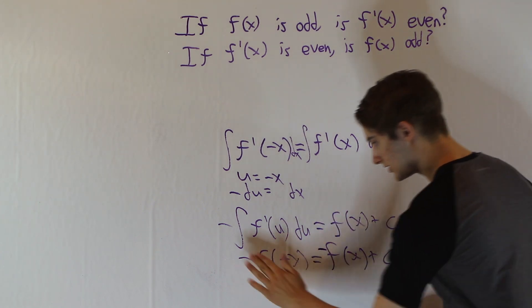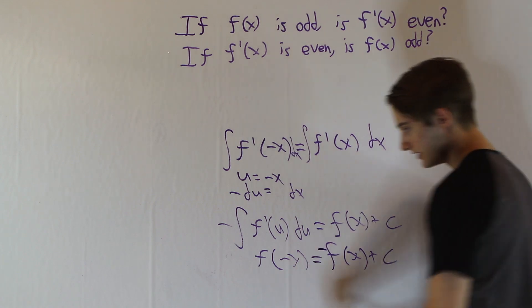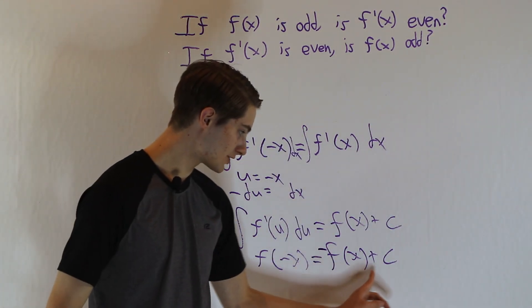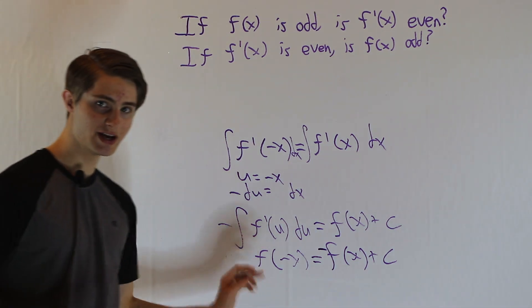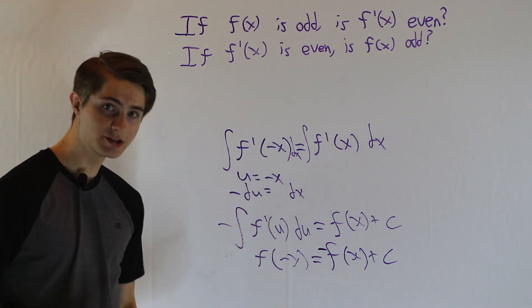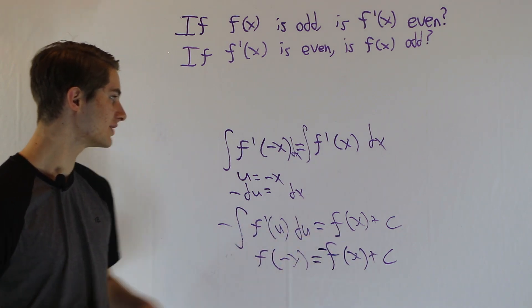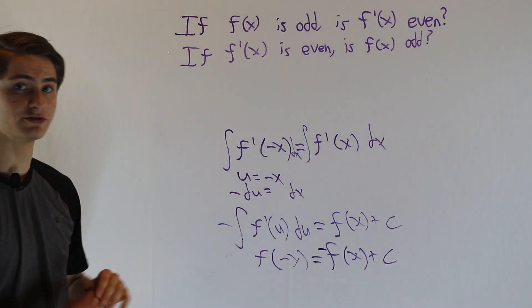but this will become negative f of x. This is f of negative x. So f of negative x equals negative f of x plus c. So is f of x odd? Well, in some cases it is. Anytime c is 0, we're going to have f of negative x equals negative f of x, which is our definition of an odd function.